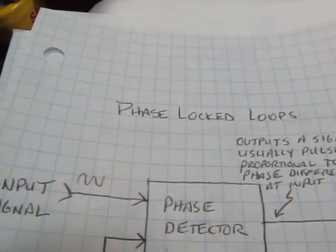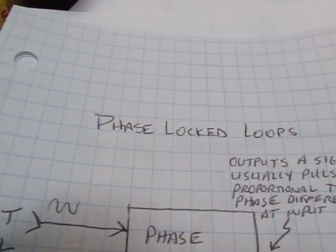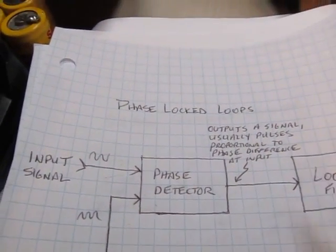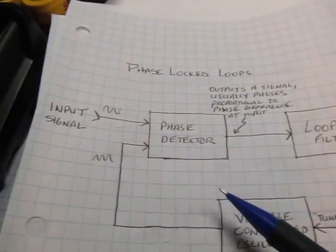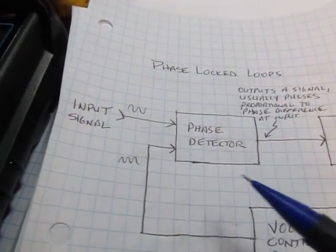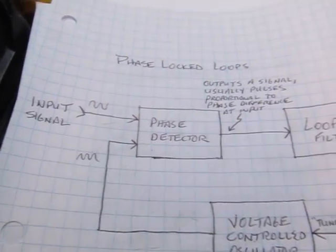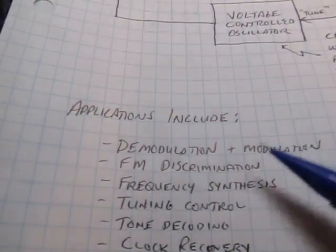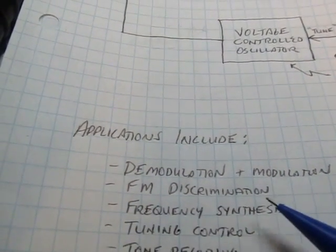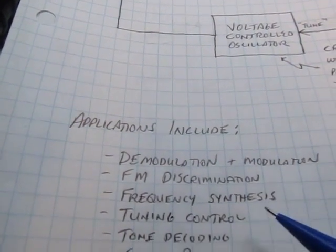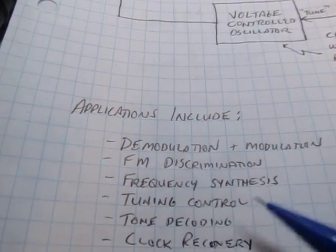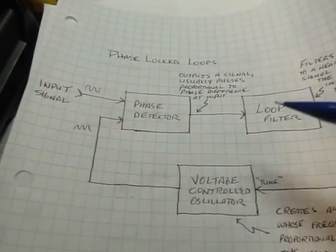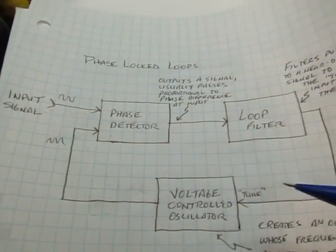Here's another video by request. This one I'm going to talk about the very basics of phase lock loop circuits. Phase lock loops are basically a circuit that allows you to lock two signals together in frequency and phase, ideally. That can be used for a number of purposes, for things like FM or AM demodulation, frequency synthesis, tuning control, clock recovery, tone decoders, etc. All phase lock loops kind of start off with a variation of this very basic block diagram.